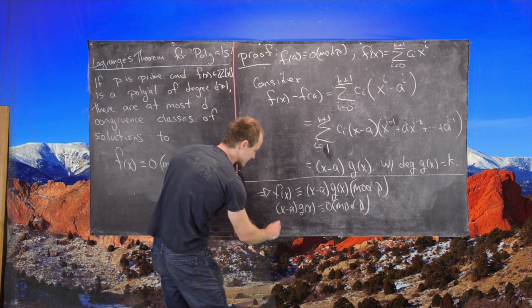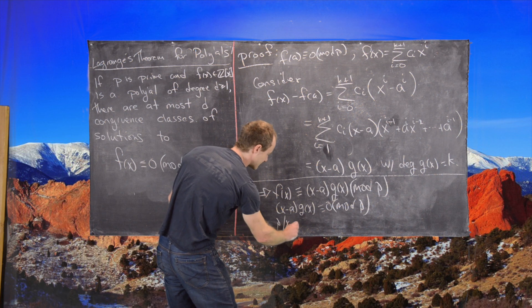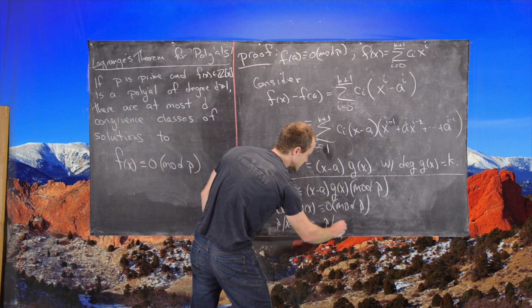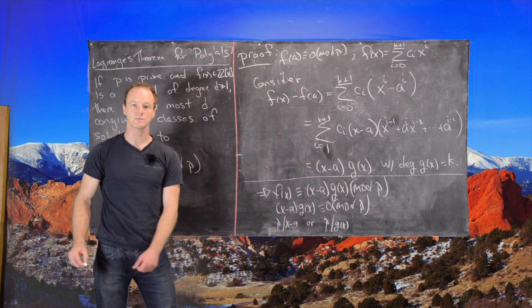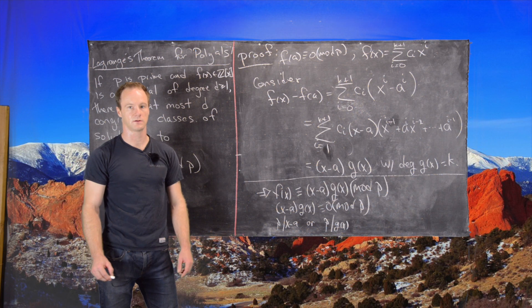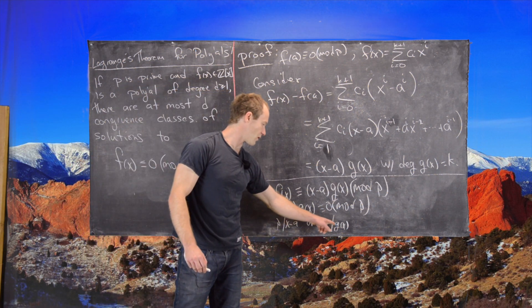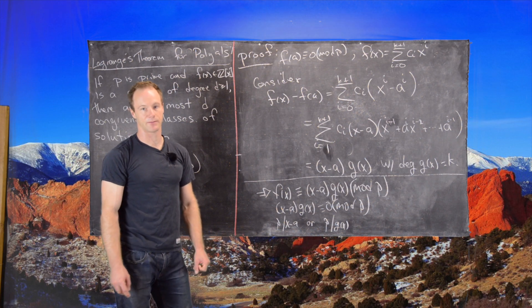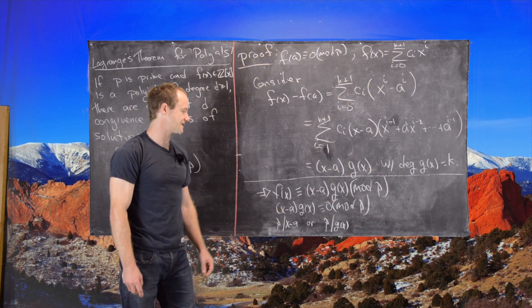Solving that tells us that P either divides X minus A or P divides G of X. We've seen there's exactly one way that this can happen. And furthermore, there are at most K ways that this can happen.